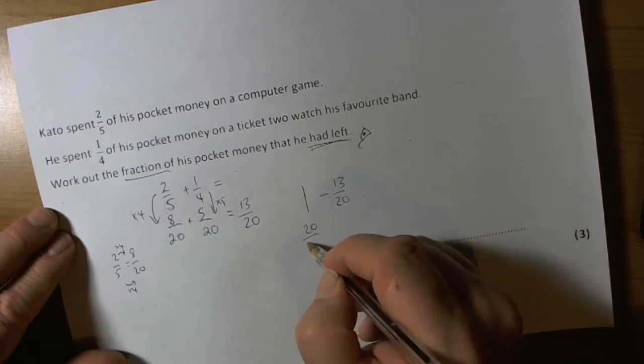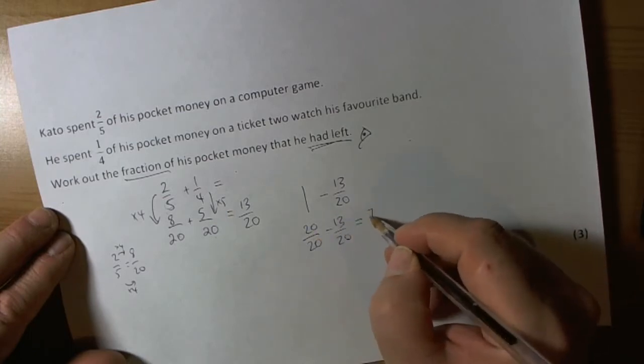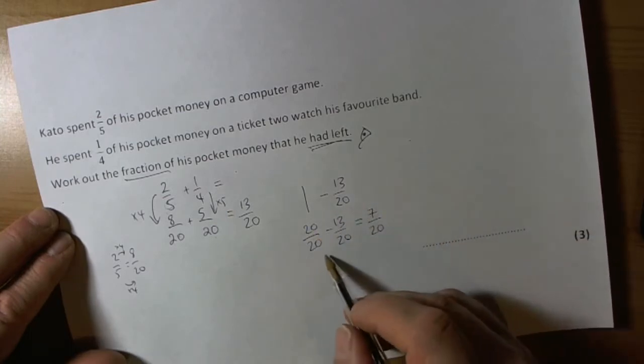So the whole minus thirteen-twentieths will tell me what is left. Well the whole in twentieths is twenty-twentieths, we're taking away thirteen-twentieths. Well twenty take away thirteen is seven-twentieths.